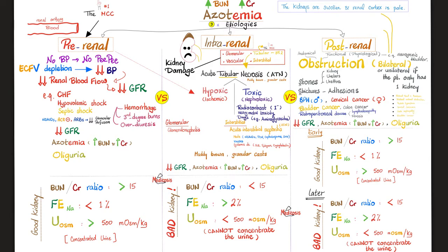Causes of pre-renal azotemia include congestive heart failure, hypovolemic shock from hemorrhage or third-degree burns (losing plasma and albumin), over-diuresis, and septic shock (inadequate tissue perfusion). Certain drugs also decrease kidney perfusion — NSAIDs, ACE inhibitors, and angiotensin receptor blockers. If pre-renal azotemia is not treated early, it can progress to intrarenal — particularly the hypoxic/ischemic type.